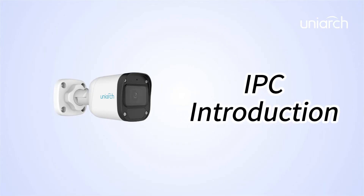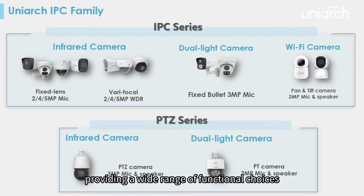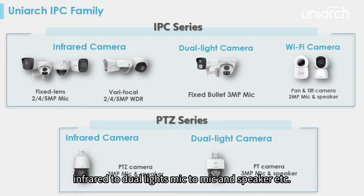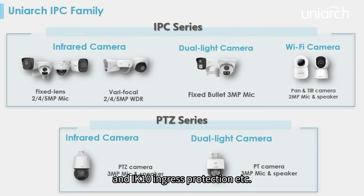Welcome to Uniarch Learning Hub. In this episode we are going to introduce the Uniarch IPC family. Uniarch IPC family has a complete product line of IP cameras, providing a wide range of functional choices — from non-PoE to PoE, digital WDR to true WDR, wired to wireless, infrared to dual lights, mic to mic and speaker, etc. It also supports motion detection, IP67, and IK10 ingress protection for the entry-level market.